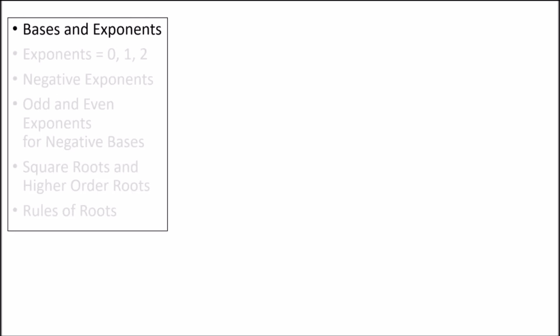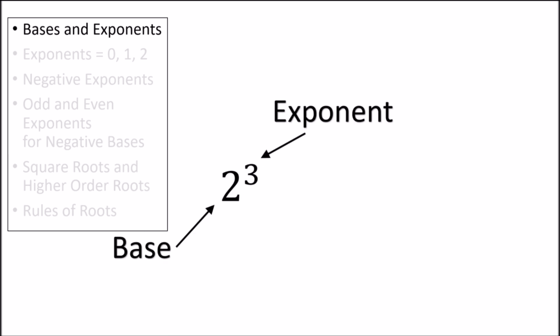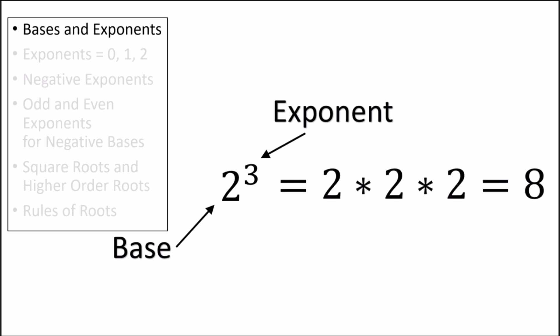I'm sure we've all heard of exponents before, but what exactly are they? Terms with exponents in them are called exponential terms. They will have a base and an exponent associated with them. The exponential term here is read as 2 to the third power, or 2 raised to the power of 3. Exponents are just a shorthand way of telling someone that we want to multiply the base by itself a certain number of times. The exponential term shown here tells us that we want to multiply the number 2 by itself 3 times, giving us 2 times 2 times 2, which is equal to 8.